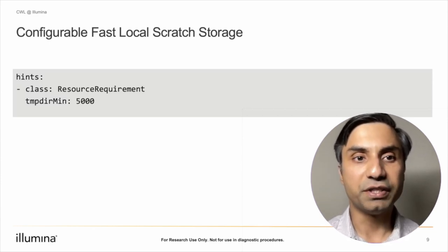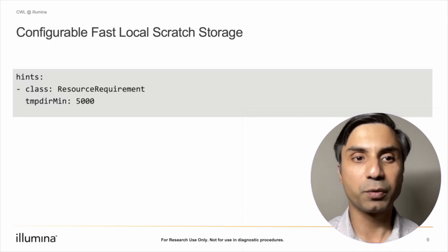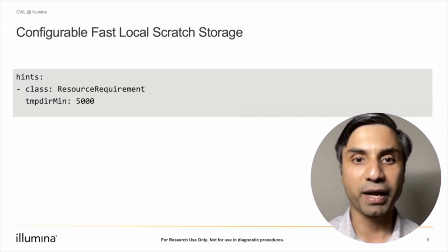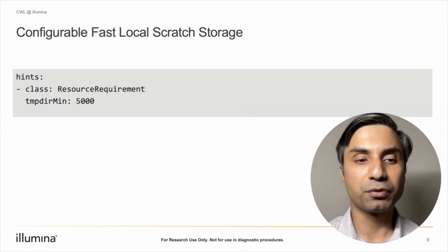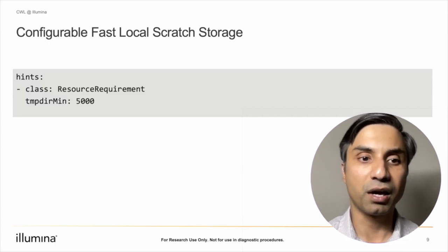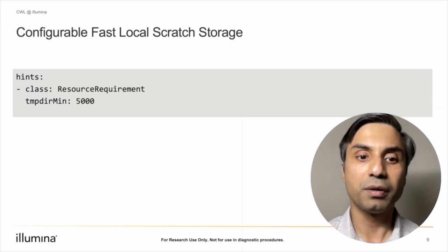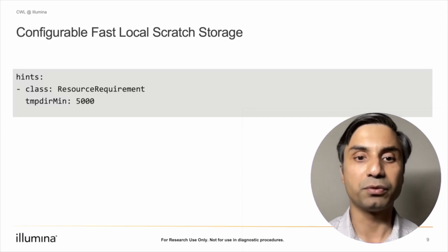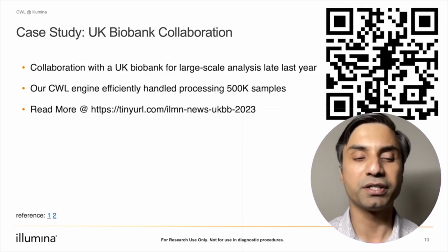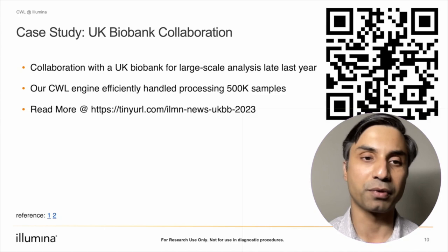Standard CWL features such as declarative resource requests, parallel step processing, easy software packaging, and community support — paired with cloud leveraging spot instances and priority job queues — makes it possible to run your analysis at scale without needing to micromanage every part of your process.